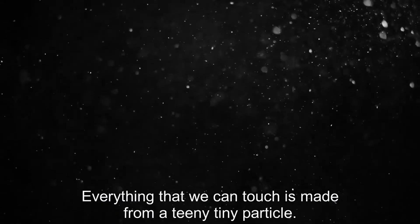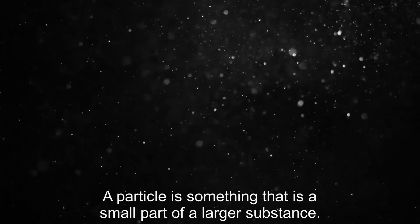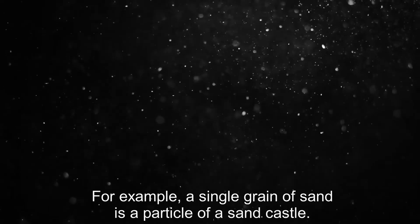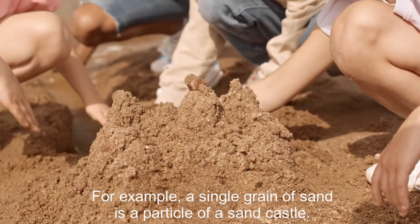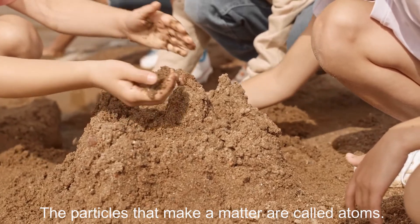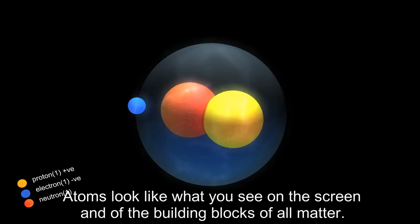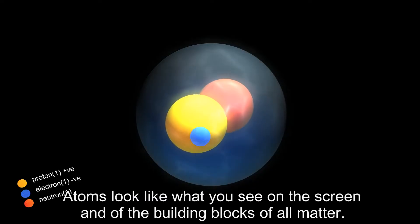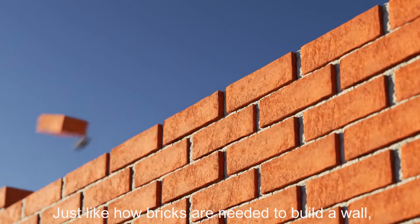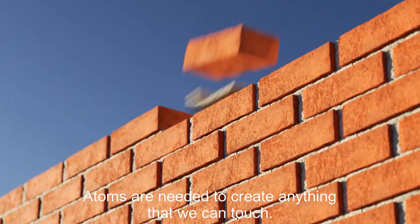Everything that we can touch is made from a teeny tiny particle. A particle is something that is a small part of a larger substance. For example, a single grain of sand is a particle of a sand castle. The particles that make up matter are called atoms. Atoms look like what you see on the screen and are the building blocks of all matter. Just like how bricks are needed to build a wall, atoms are needed to create anything that we can touch.